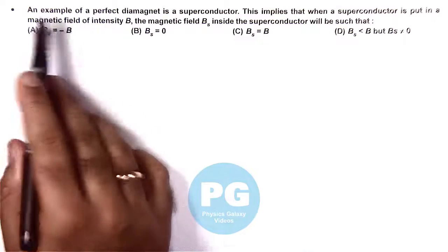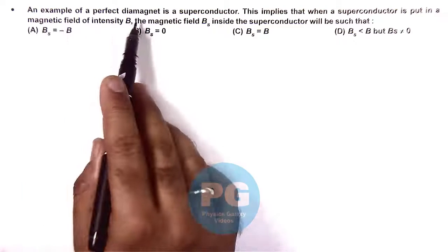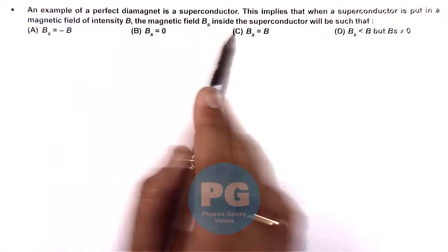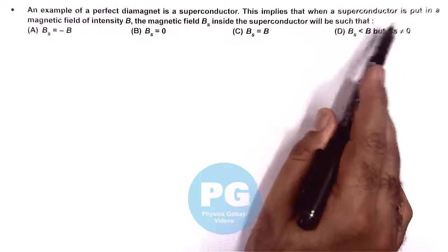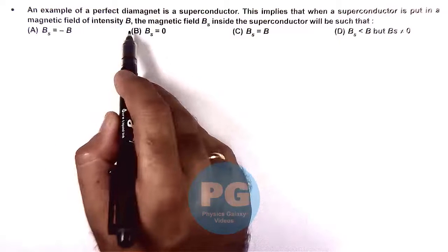In this question, it is saying that an example of a perfect diamagnet is a superconductor, that also we have discussed in theory. And this implies that when a superconductor is put in a magnetic field of intensity B,